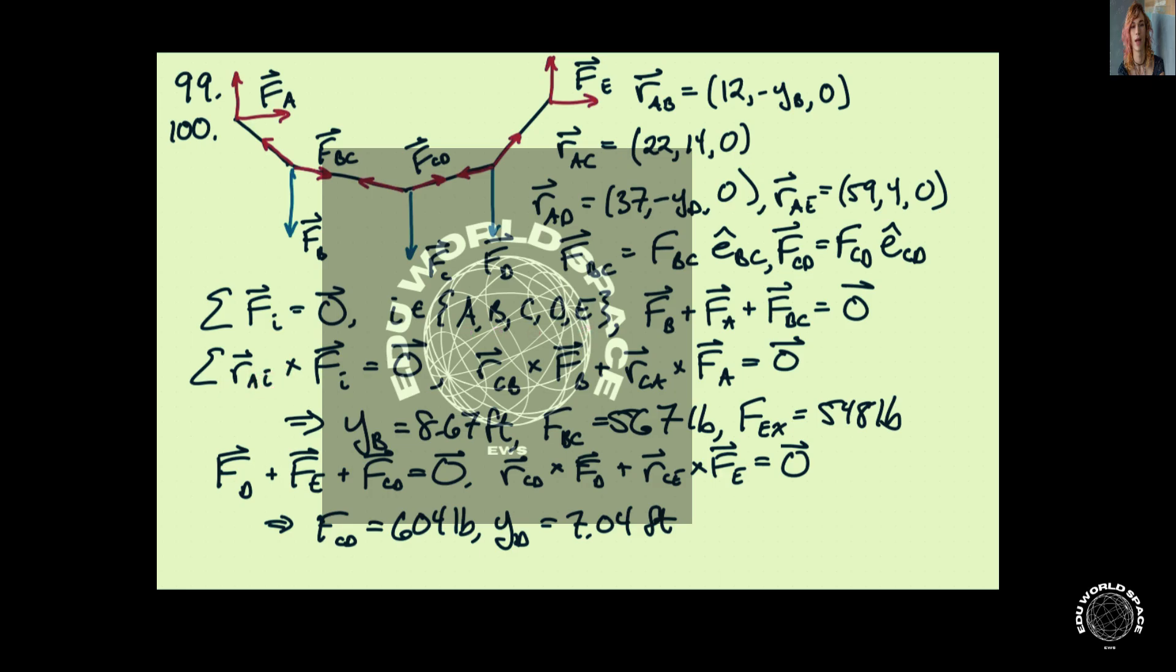We can also cut this rope and look at a free body diagram of that subsystem. We know that means that FB plus FA plus FBC has to be zero. And then if we take moments about point C, we get this equation. This will give us two equations, a third equation, five more equations, and then six equations.